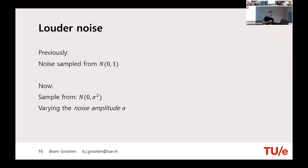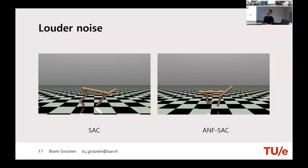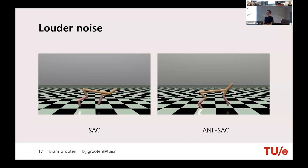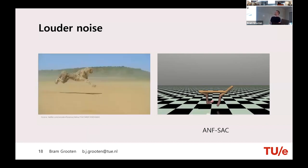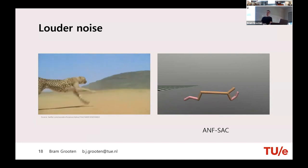One extension: we looked at what happens when the noise is louder — increasing the sigma of the Gaussian distribution. SAC especially struggles in this setting, while ANF+SAC remains quite robust even against louder noise. You can also see this in behavior videos — on noise amplitude 8, SAC really struggles to walk well, whereas ANF+SAC has a nice galloping motion. HalfCheetah really resembles the galloping motion of an actual cheetah.